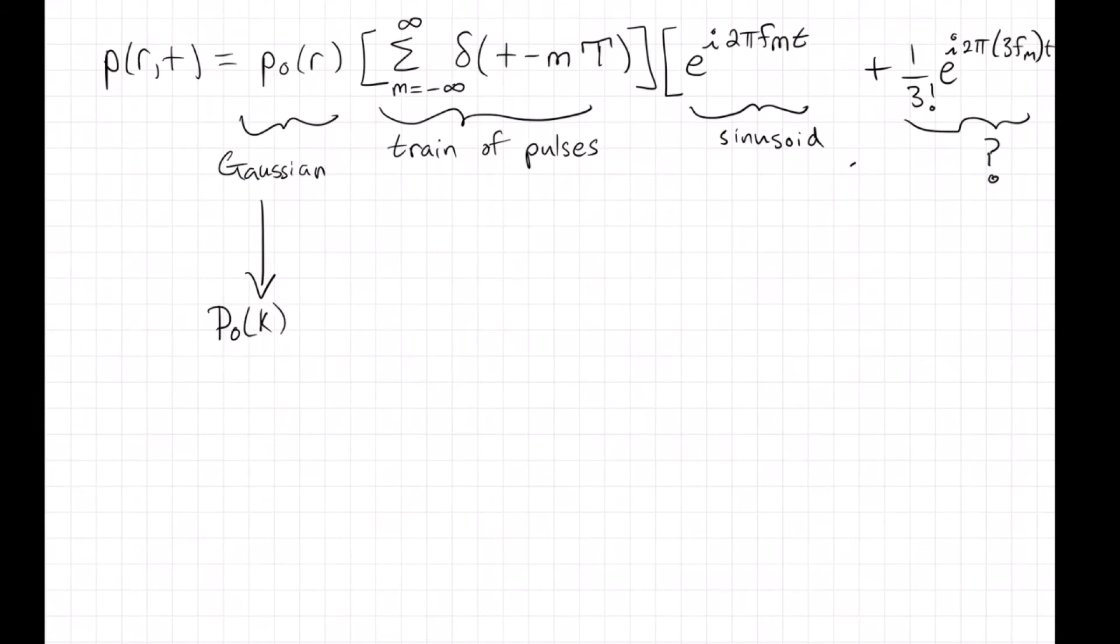Next, I'll take the Fourier transform of the Dirac comb, or the series of pulses. It turns out that's one that you can look up at, say, Wikipedia. And it also turns out to be a train of delta functions. It just happens to be in Fourier space instead of in the time domain.